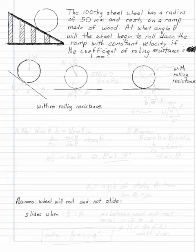Here we have a 100 kg steel wheel with a 50 mm radius on a ramp. We want to find out when this wheel will roll down the ramp of its own accord. We're given that the coefficient of rolling resistance is 1 mm.